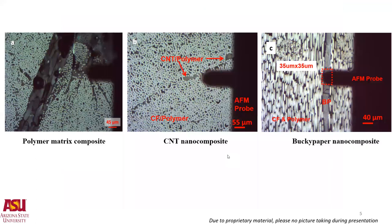A technique that can explore this heterogeneity is atomic force microscopy. These samples first need to be polished down to 0.1 micron, and then we look at them with an optical microscope to find the location of interest. The slender shiny material is the Bucky paper, which is sandwiched between carbon fiber monofilaments. Pictures A and B are shown for comparison: picture A is a regular polymer composite, and picture B is a CNT polymer nanocomposite at 0.5 weight percent multi-walled carbon nanotubes.